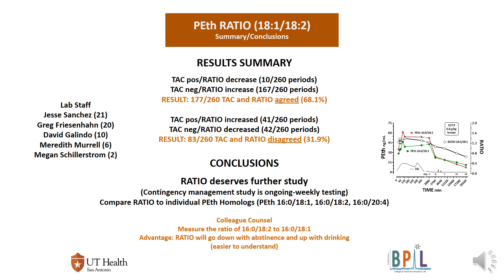After considerable discussion with colleagues, we're going to change the ratio that we look at. The small graph on the right shows what happens to the ratio of 18:2 to 18:1 — it goes down with abstinence, which makes sense because the PEth levels go down as the drinking level goes down.